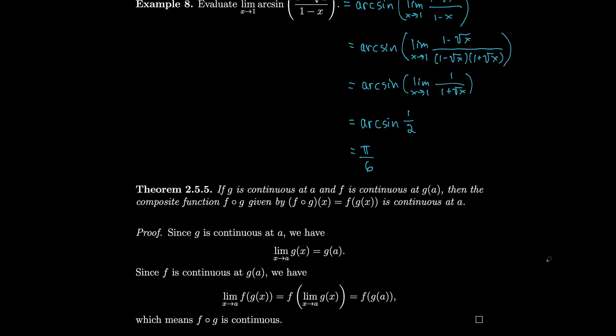If g is continuous at a and f is continuous at g(a), then the composite function f∘g defined by (f∘g)(x) = f(g(x)) is continuous at a. The proof: since g is continuous at a, the limit of g(x) as x→a equals g(a). Since f is continuous at g(a), the previous theorem lets the limit pass through f, giving lim f(g(x)) = f(g(a)). So f∘g is continuous at a.